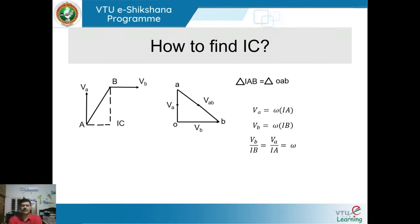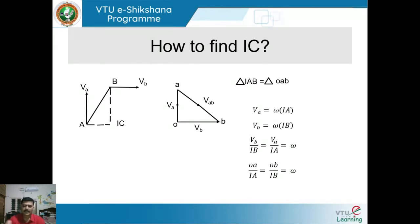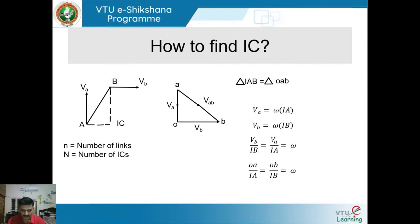At the start of solving any problem, you first need to find how many instantaneous centers exist in the given mechanism. The formula is: capital N equals small n times (n minus 1) divided by 2, where n is the number of links and N is the number of instantaneous centers.